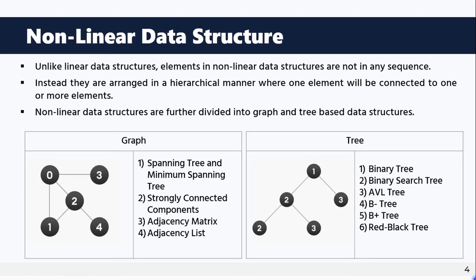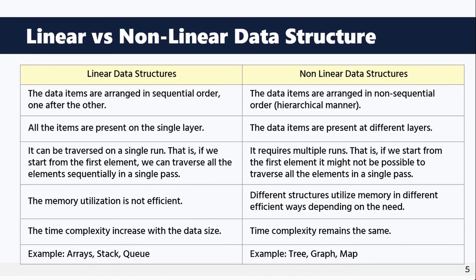The main difference between linear and non-linear data structures: linear data structures arrange data in sequential order, while non-linear data structures are non-sequential and hierarchical. In linear data structures, all items are present on a single layer and can be traversed in a single pass. In non-linear structures, starting from the first element, it might not be possible to traverse all elements in a single pass.